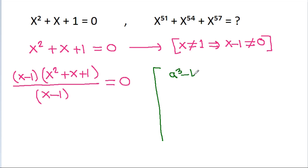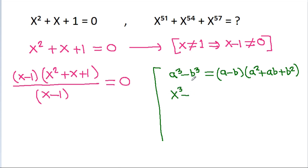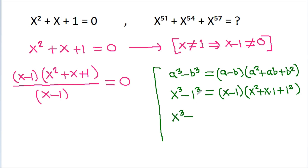Now, a cube minus b cube is equal to a minus b times a squared plus ab plus b squared. If a is x and b is 1, then it will be x minus 1 times x squared plus x times 1 plus 1 squared, which gives x cubed minus 1 equals x minus 1 times x squared plus x plus 1.